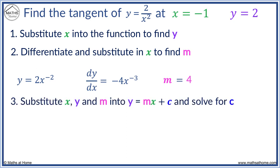Now we have x, y and m. We substitute these into y equals mx plus c to find c. y equals 2, m equals 4, x equals minus 1. 4 times minus 1 equals minus 4. And we add 4 to both sides to get c equals 6.